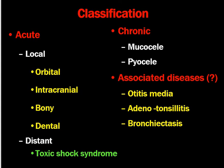The complications can be classified into acute and chronic complications along with associated diseases. Acute complications include local complications like orbital, intracranial, bony, and dental, as well as distant complications like toxic shock syndrome, which is not uncommon. Among chronic complications, mucocele and pyocele are common, and associated diseases include otitis media, adenotonsillitis, and bronchitis.